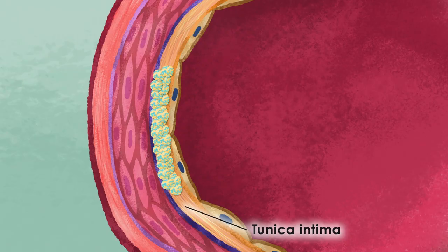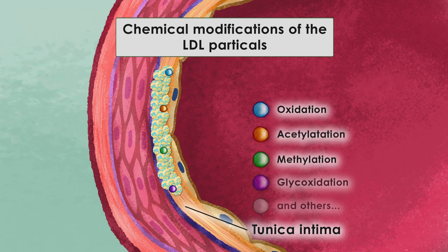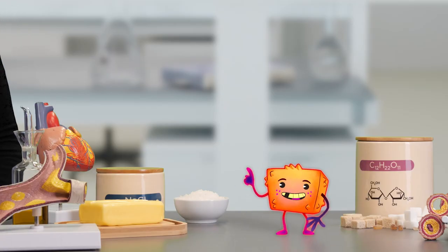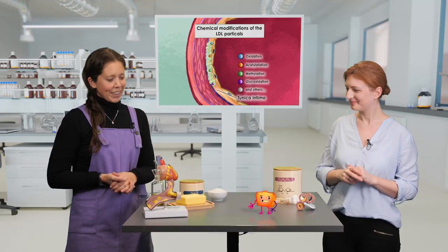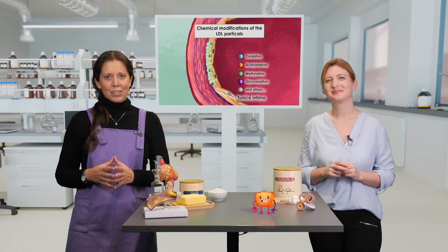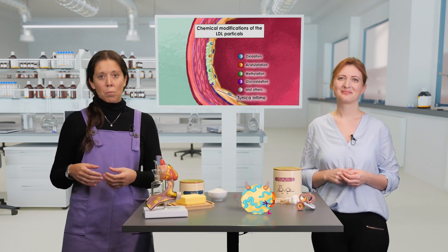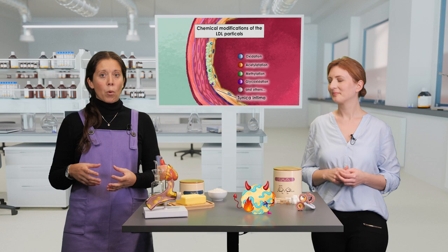Once the LDL particles accumulate in the intima, they become chemically modified by specific enzymes. The most common chemical modification is oxidation. However, other types of chemical modifications can also take place, such as acetylation, methylation, and glycoxidation among others. Glycoxidation — the prefix 'glyco' means sugar. High glucose levels, in connection with the metabolic syndrome, can stimulate the attachment of modified sugar molecules to LDL, which turns it into a pro-inflammatory molecule. We will hear more about that later.